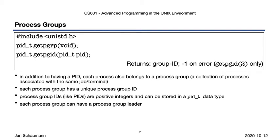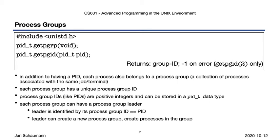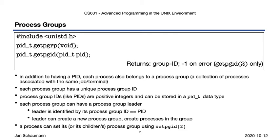Each process group may have a process group leader. This leader is identified by having the same process ID as the process group ID, and this leader can then create a new process group and create processes within this group. To set the process group of any process explicitly, you can call setpgid, but of course that only works for the current process or any of your children, unless you're the super user.